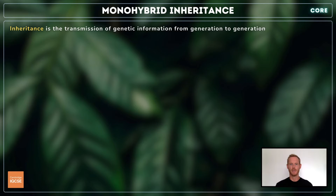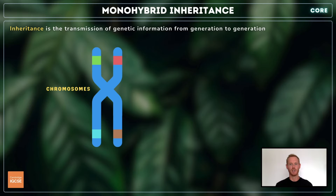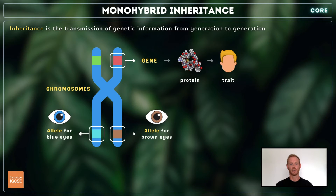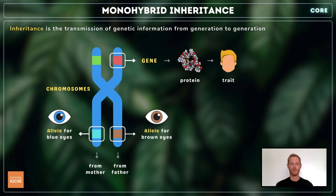Inheritance is the transmission of genetic information from generation to generation. Chromosomes carry genetic information in the form of DNA; a gene is a section of DNA that codes for a specific protein, and alleles are different versions of the same gene. Since we possess two copies of each chromosome, one from our mother and one from our father, we also have two alleles of each gene.